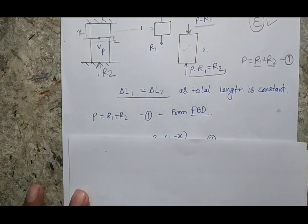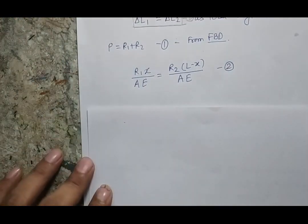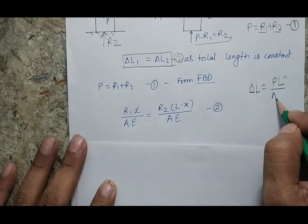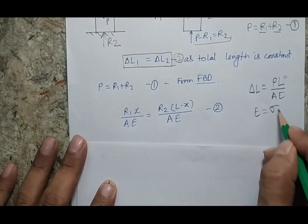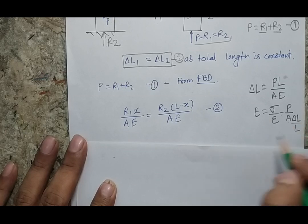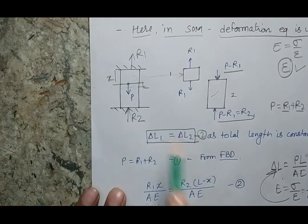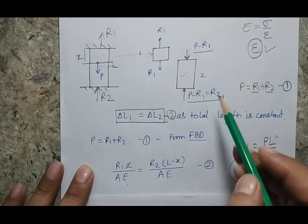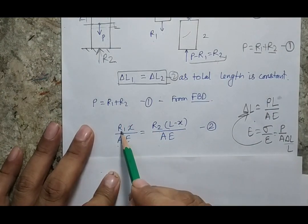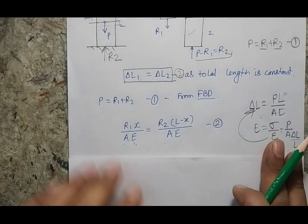Writing the deformation equation: ΔL = PL / (AE), so for the top portion: ΔL1 = R1·x / (AE), and for the bottom portion: ΔL2 = R2·(l − x) / (AE). Setting ΔL1 = ΔL2 gives: R1·x = R2·(l − x). Now I have two equations and two unknowns (R1 and R2), which can be solved. This is how we solve a statically indeterminate problem using the deformation equation as the additional equation.